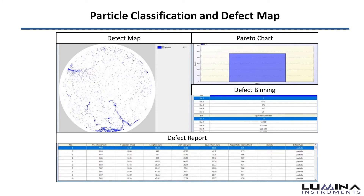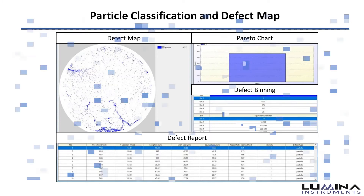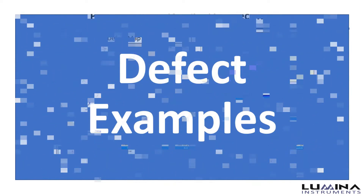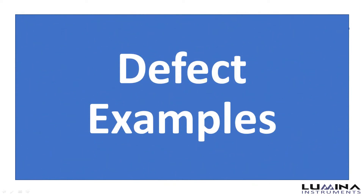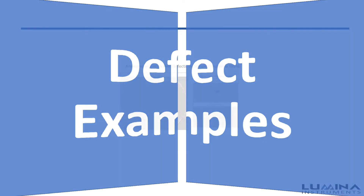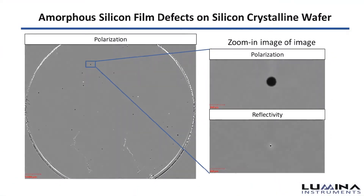The example shown details particles on a 150mm wide silicon wafer. The AT1 Optical Scanner can readily detect and classify multiple types of defects, and the following examples showcase its varied application on different silicon samples.